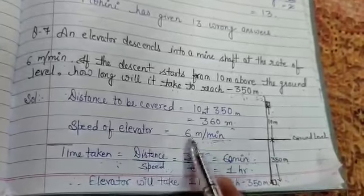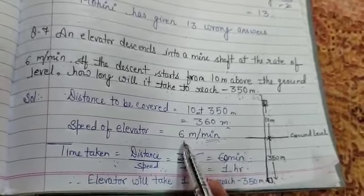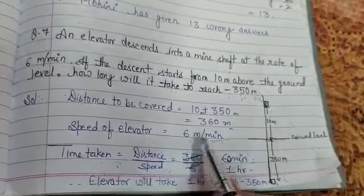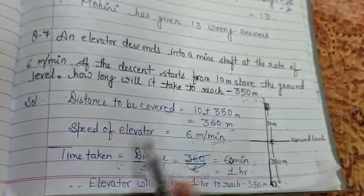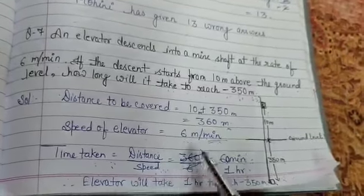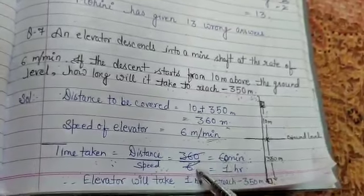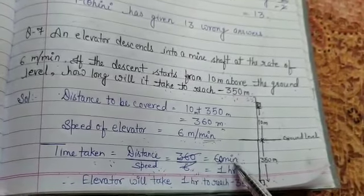And the speed of the elevator is 6 meters per minute. Means in 1 minute, the elevator is moving 6 meters. So in how much time will it move 360 meters? So time taken will be distance upon speed. So distance is 360 meters and speed is 6 meters per minute. So divide it, we are getting 60 minutes.